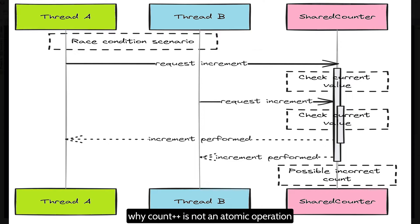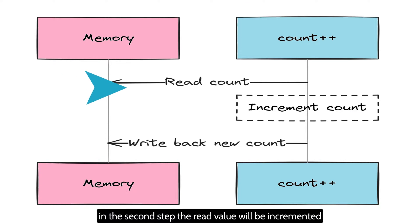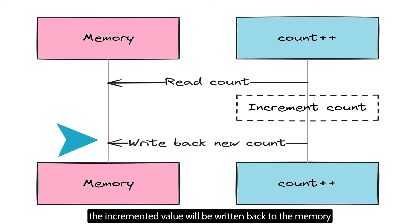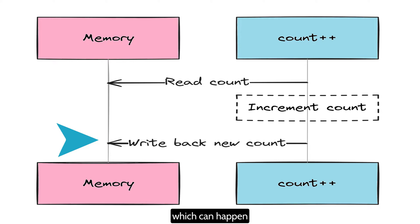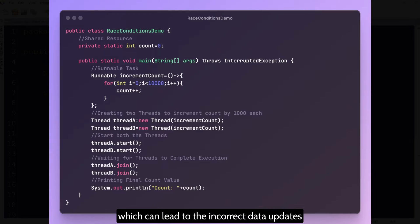Why is count++ not an atomic operation? Count++ is actually a three-step operation. The first step is to read the value from memory for the count variable. In the second step, the read value will be incremented, and in the third and last step, the incremented value will be written back to the memory. So there is a high possibility that a context switch can happen between any of these multi-step operations, which can lead to incorrect data updates.